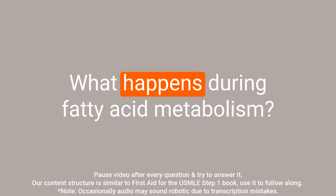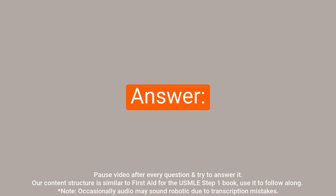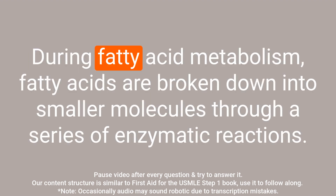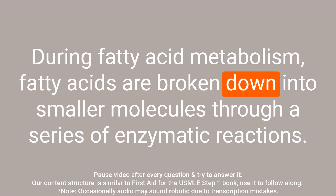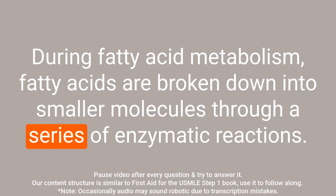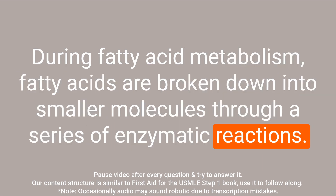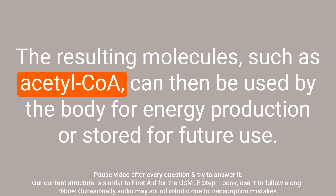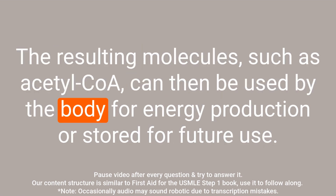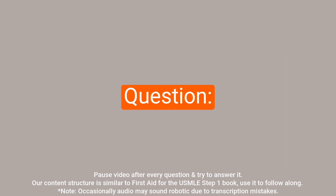Question: What happens during fatty acid metabolism? Answer: During fatty acid metabolism, fatty acids are broken down into smaller molecules through a series of enzymatic reactions. The resulting molecules, such as acetyl-CoA, can then be used by the body for energy production or stored for future use.